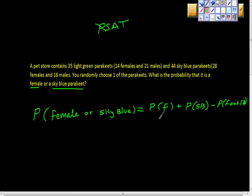Good job. So what's the probability of a female? How many females are there? 42. How many total parakeets? 79. What's the probability of sky blue? 44 over 79.